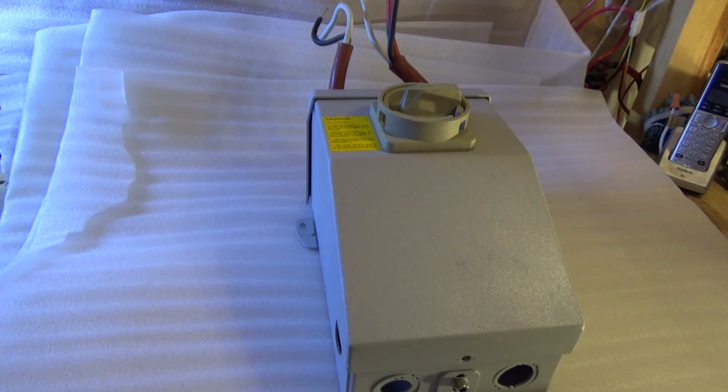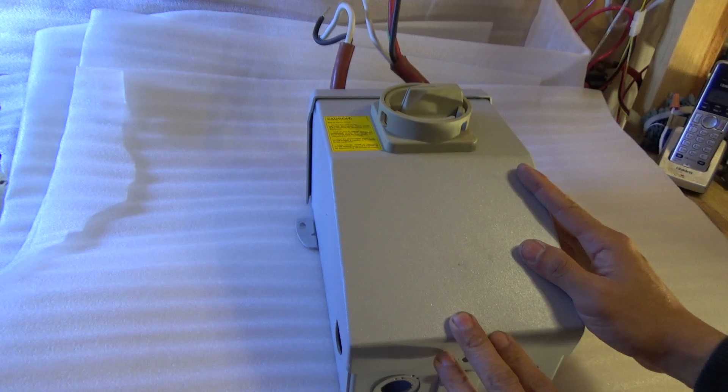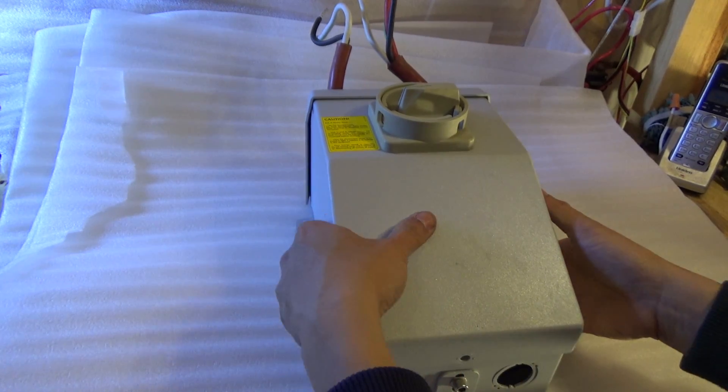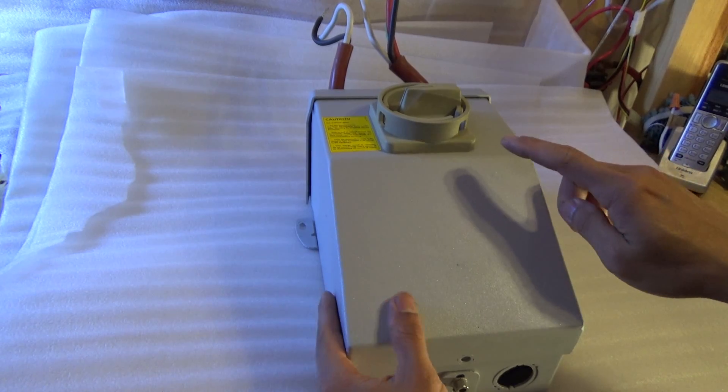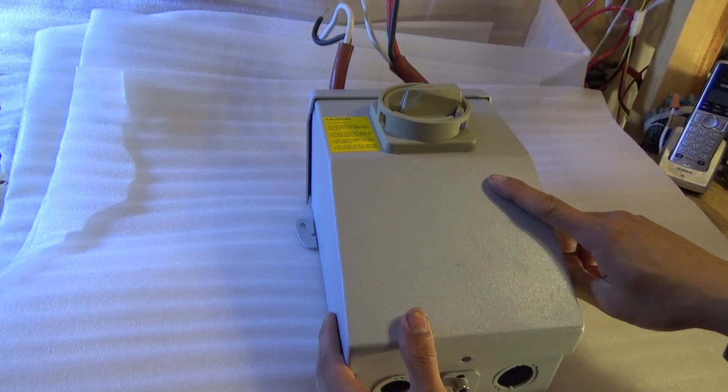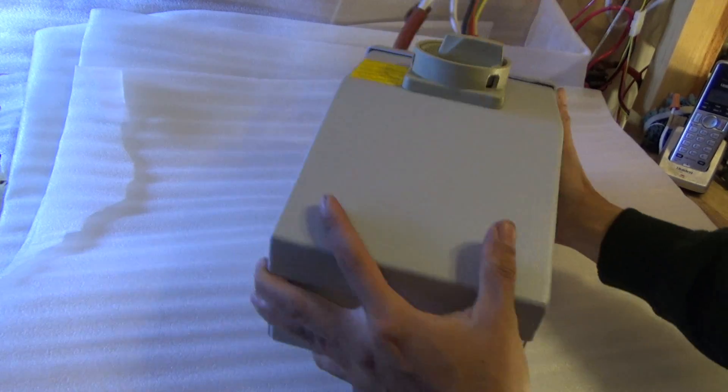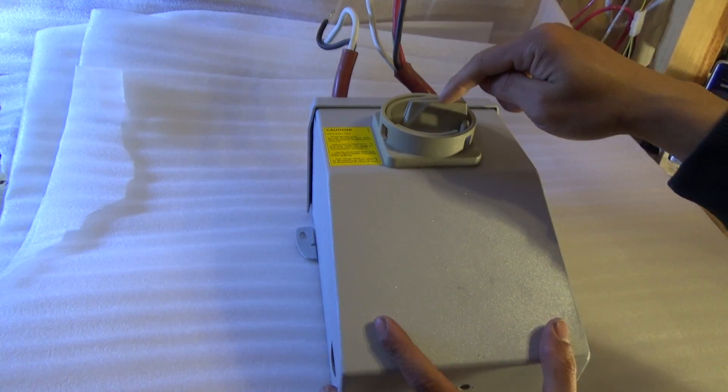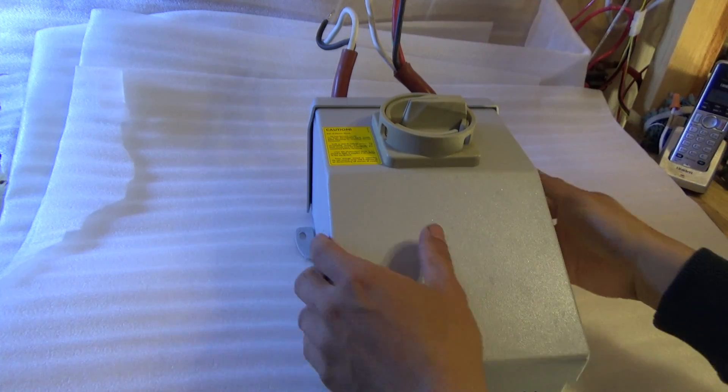So this is a typical Sunny Boy disconnect that you install on the bottom of the inverter. First thing you got to do is open up the front cover. To open the front cover, you first have to turn the switch to the OFF position, to the horizontal position, that's the OFF position.